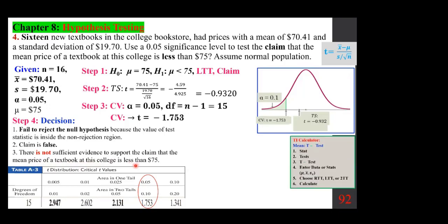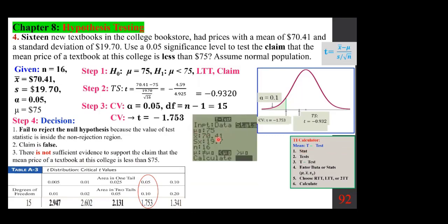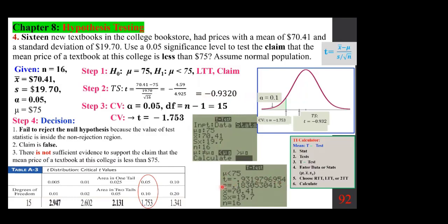For the technology approach, we use the mean T-test, plugging in mu, x-bar, S, N, and selecting 'less than.' The output shows the same test statistic we calculated and a P-value of approximately 0.18, which is larger than alpha of 0.05 — the same decision: fail to reject the null hypothesis.